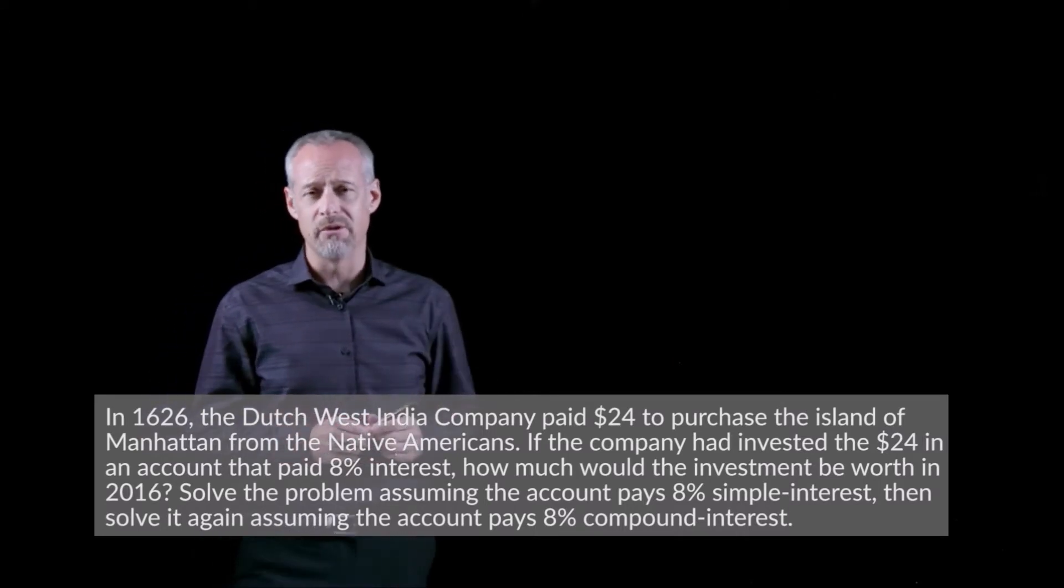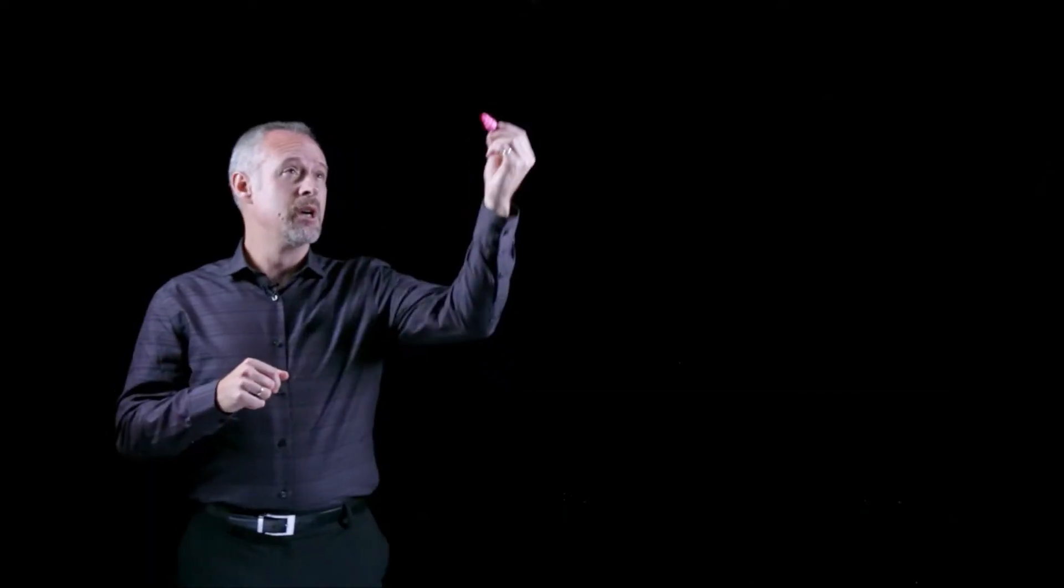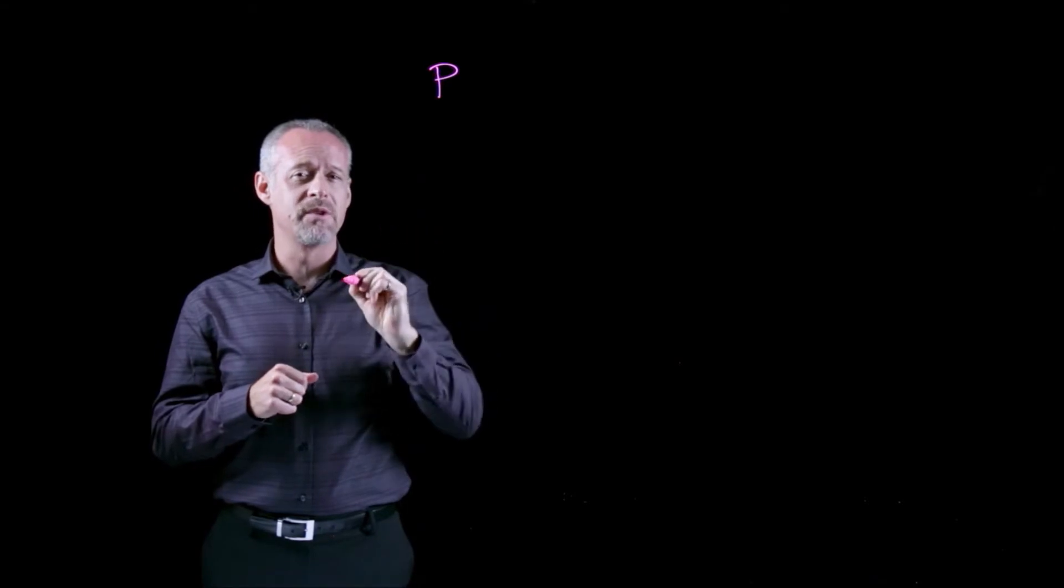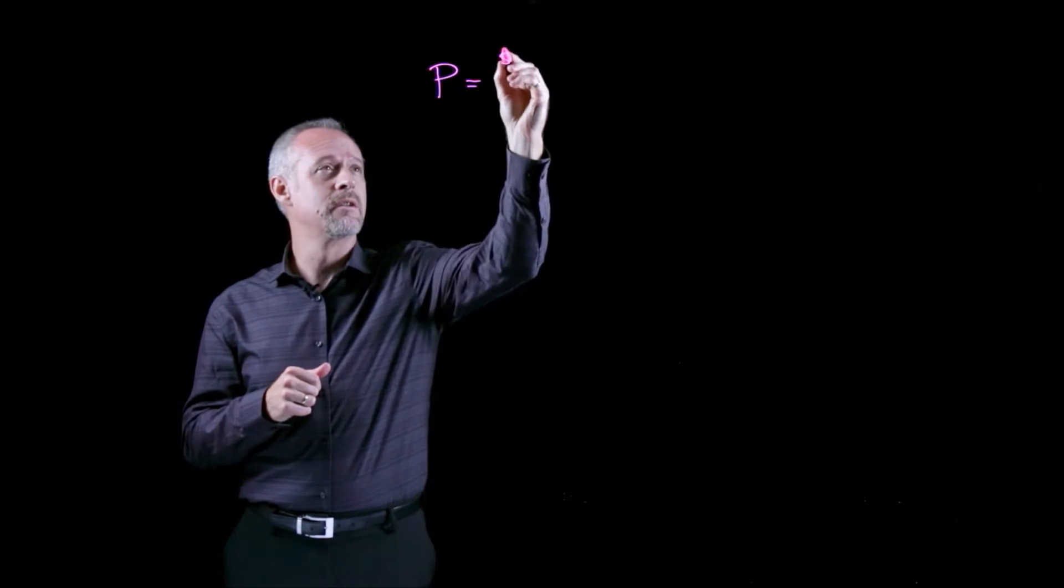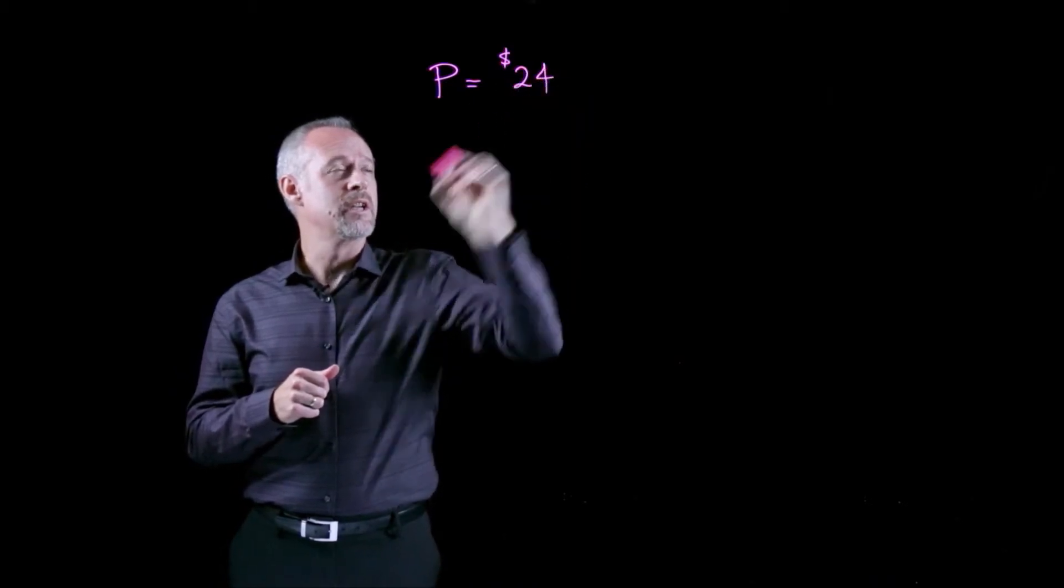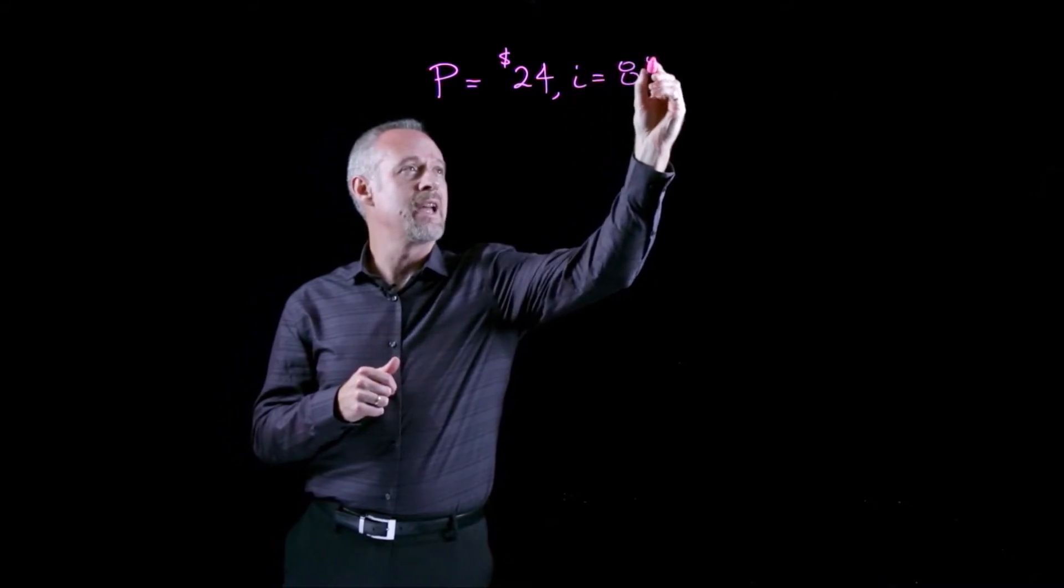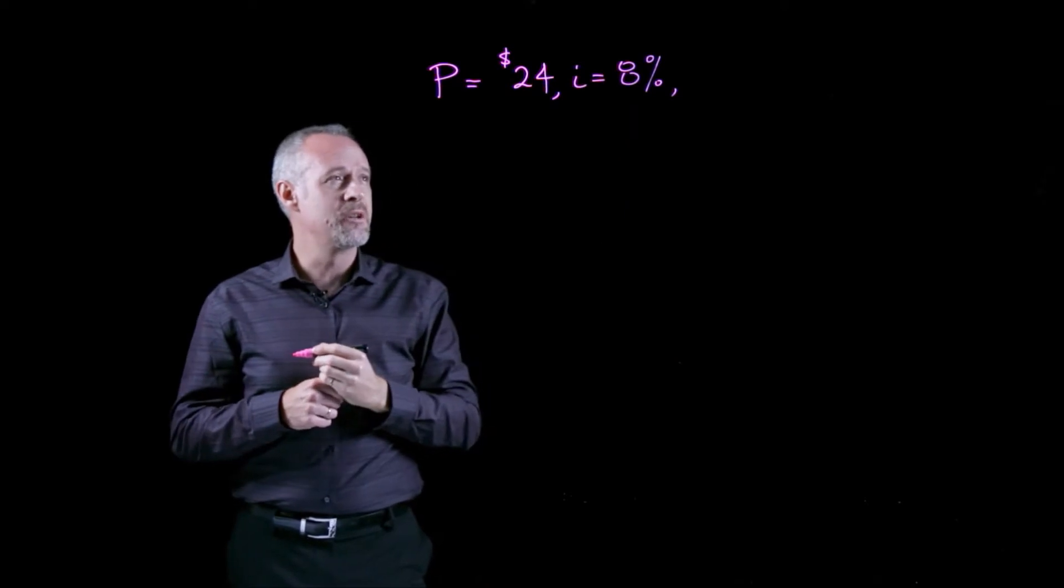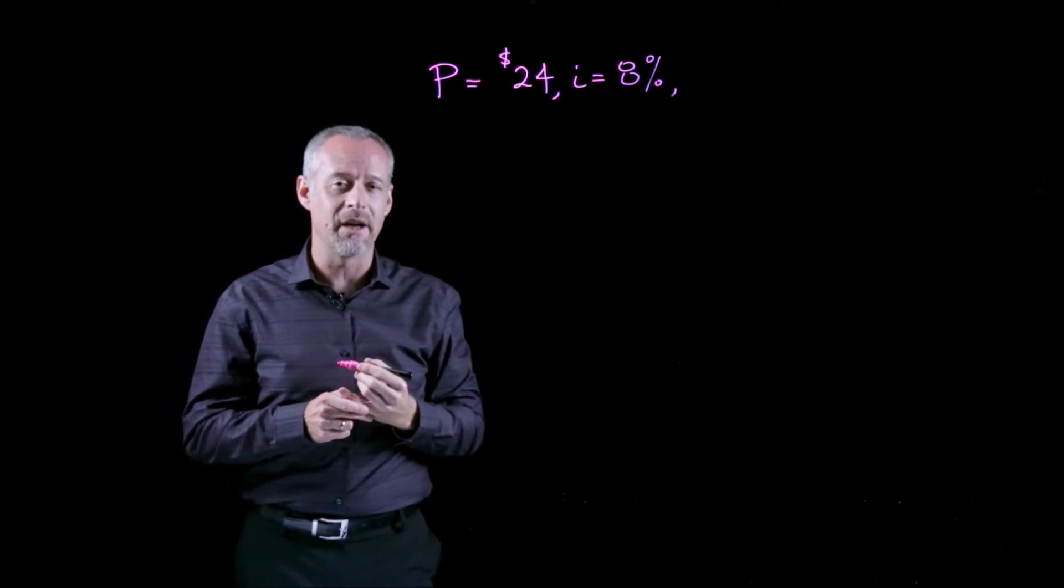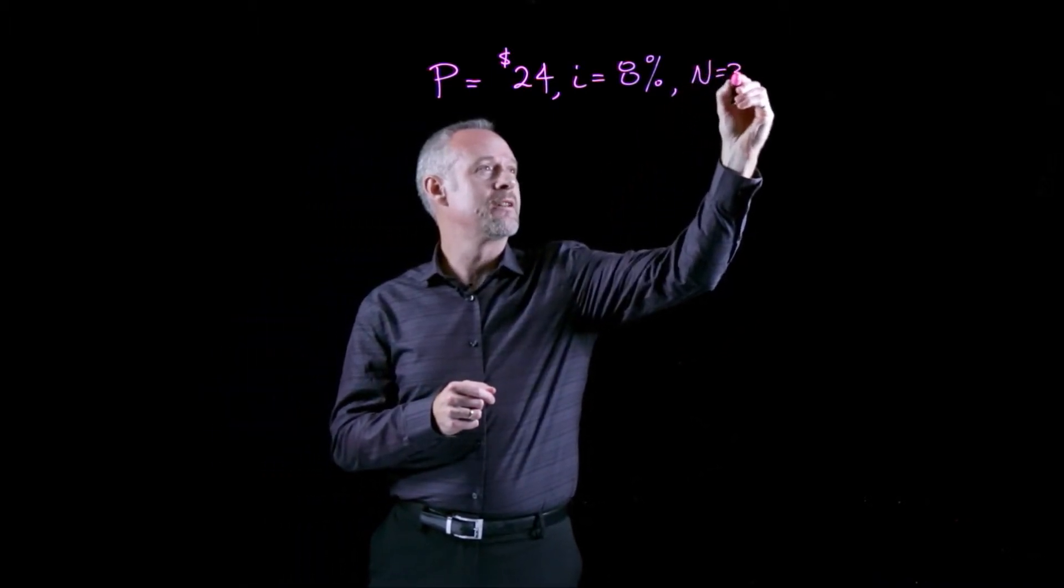So, the first thing we do is convert what we know from the problem into our engineering economics variables. We'll pretend that time t equal to 0 is 1626 when the purchase was made, so our P is $24, we'll assume an interest rate of 8%, and the years between this year, 2016 and 1626, is 390 years.